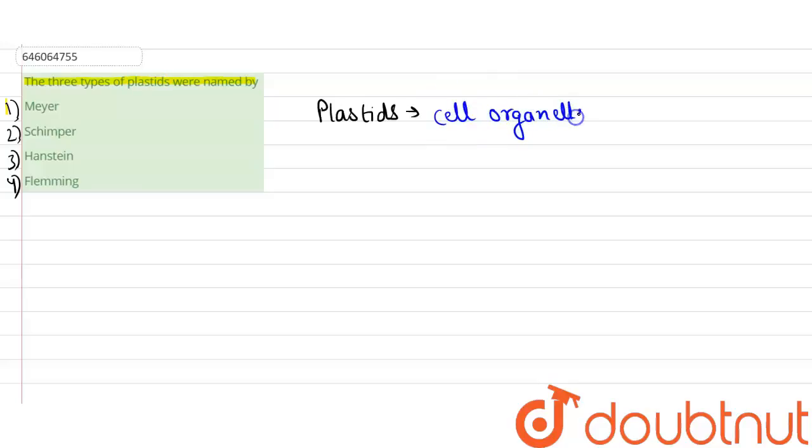Plastids are cell organelles found in plants and euglenoids. Basically, there are three types.